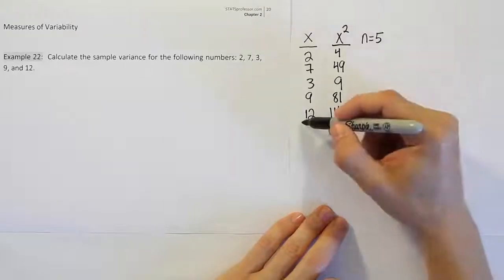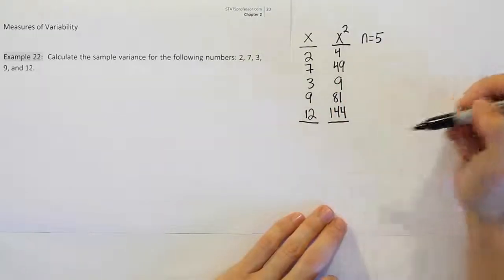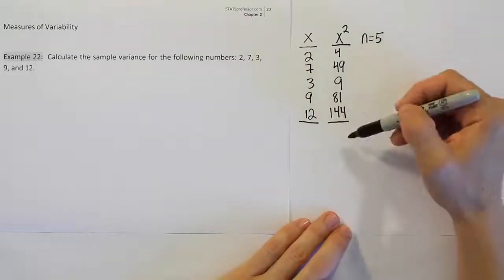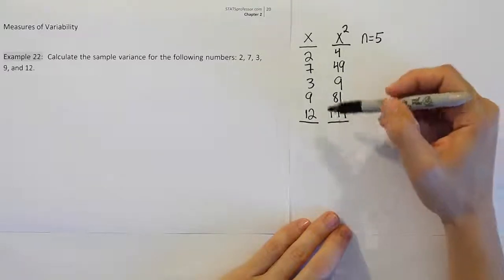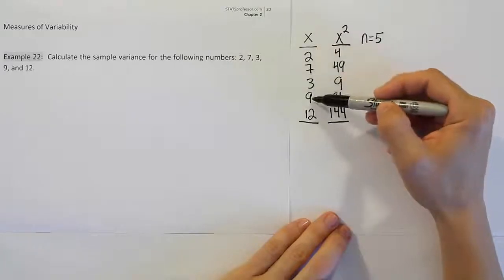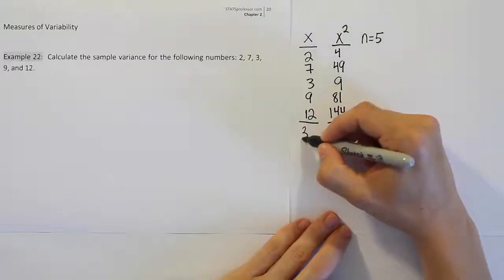Alright, and then from there, we want to add up the two columns we created. So we're going to add this column together and come up with our total. So if I add 2 and 7, I get 9. And then another 9 here makes 18. 18 and 12 makes 30. And I have that 3 there. So I get 33.